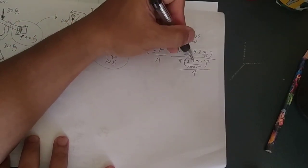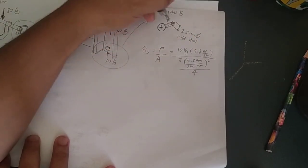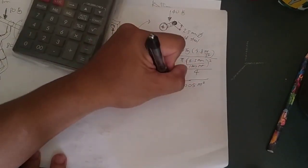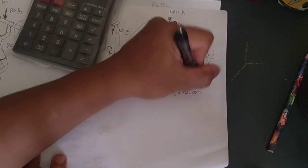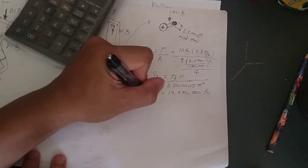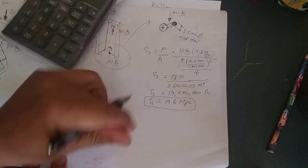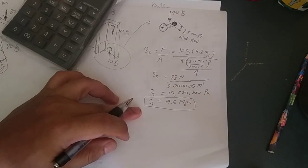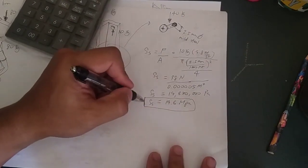So this is basically π diameter squared over 4, area of a circle. So that's 19,600,000 pascal or equivalent to 19.6 megapascal. So that's the shear stress experienced by the screw.